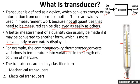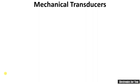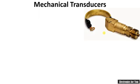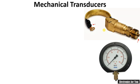Transducers are mainly classified into mechanical transducers and electrical transducers. A simple example of a mechanical transducer is the C-type Bourdon tube, which converts input pressure — for example from a fluid — into displacement. The pressure tries to make the C-shaped Bourdon tube straight, and therefore it converts pressure into displacement.